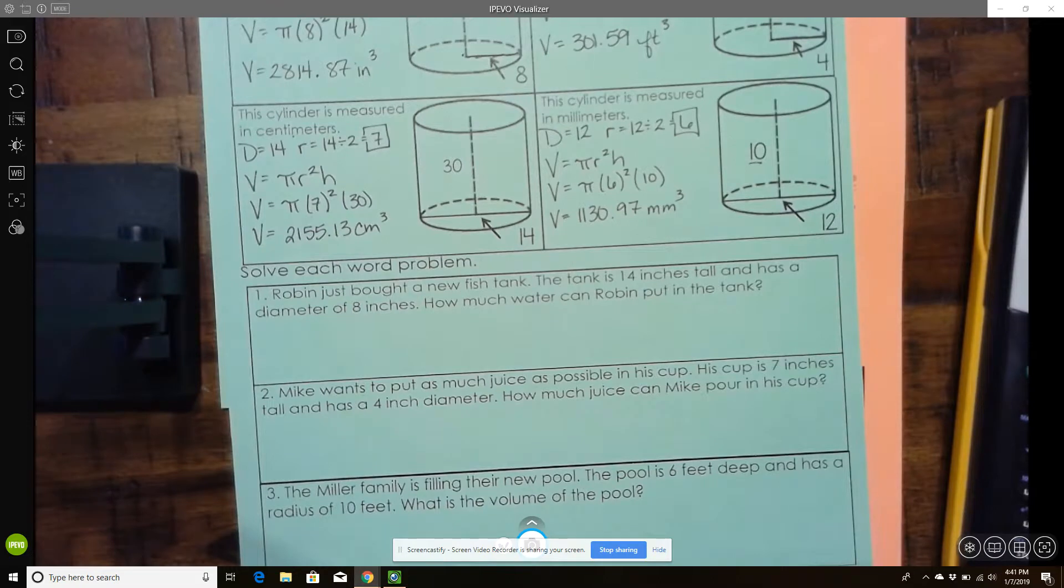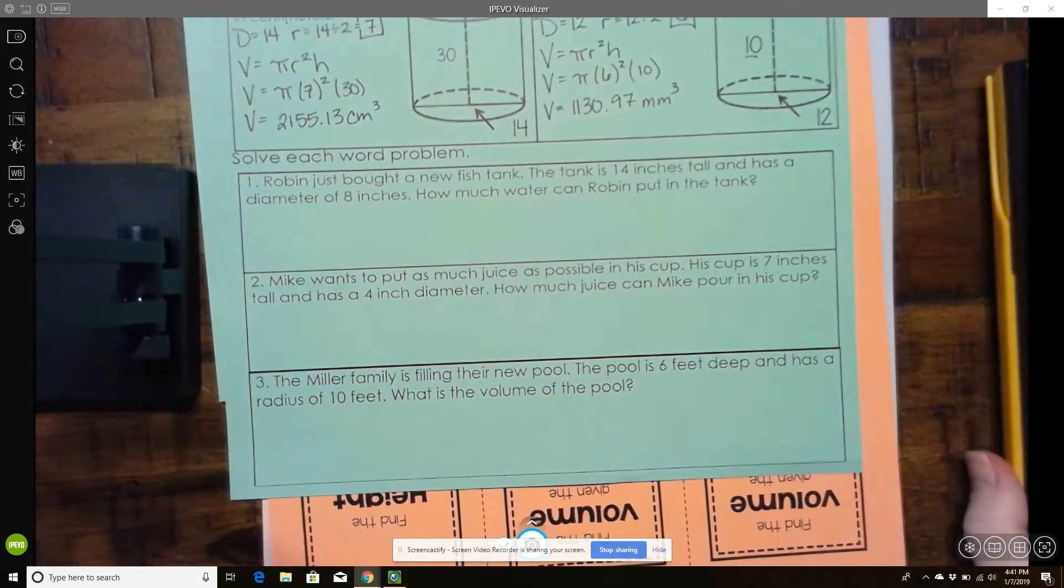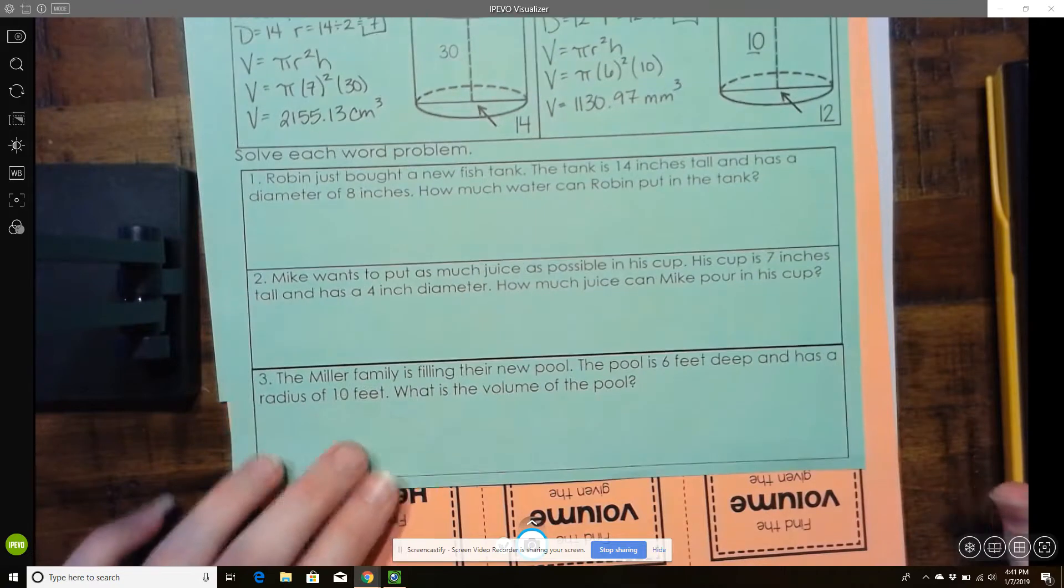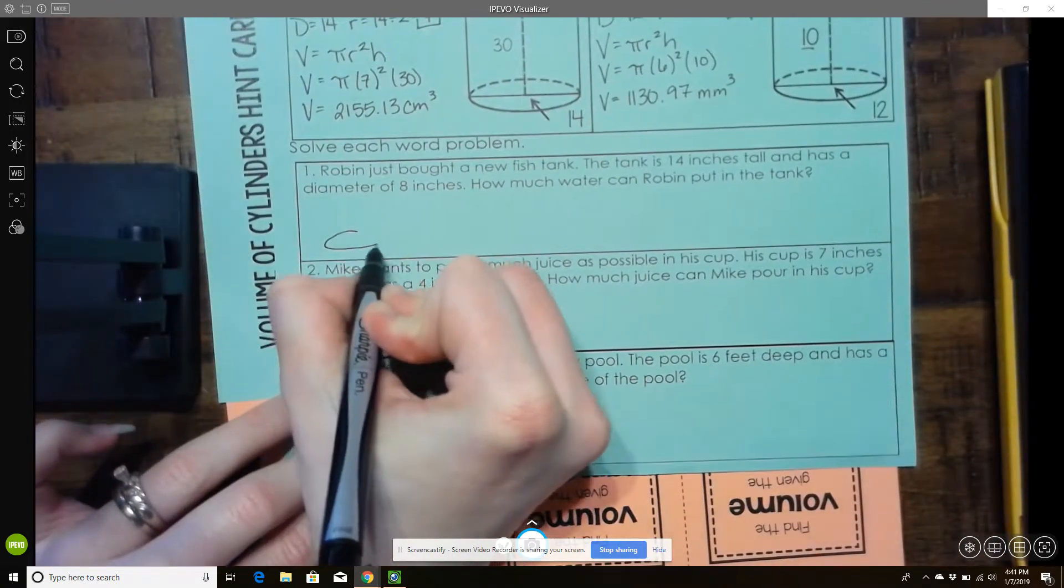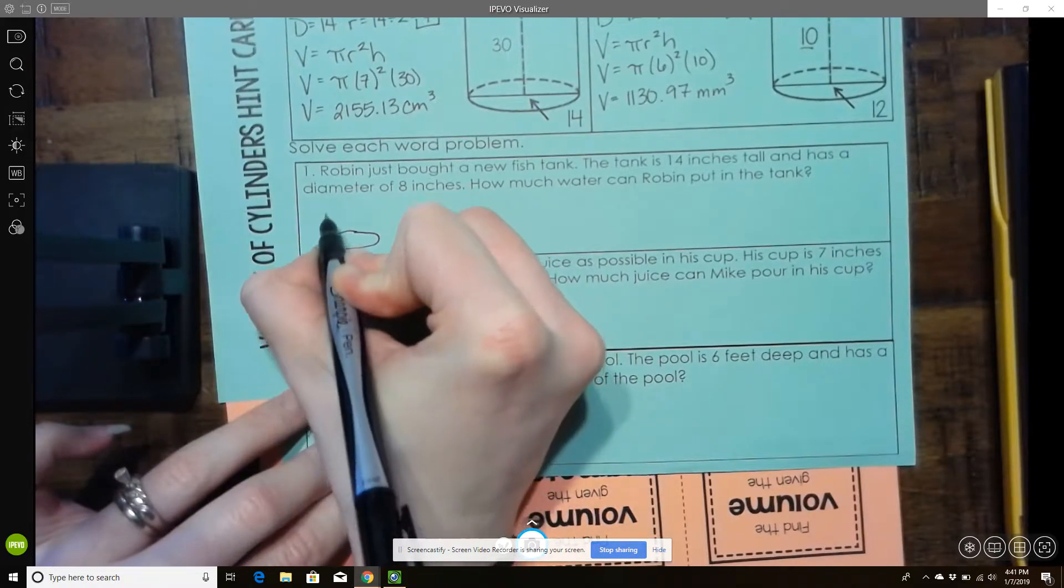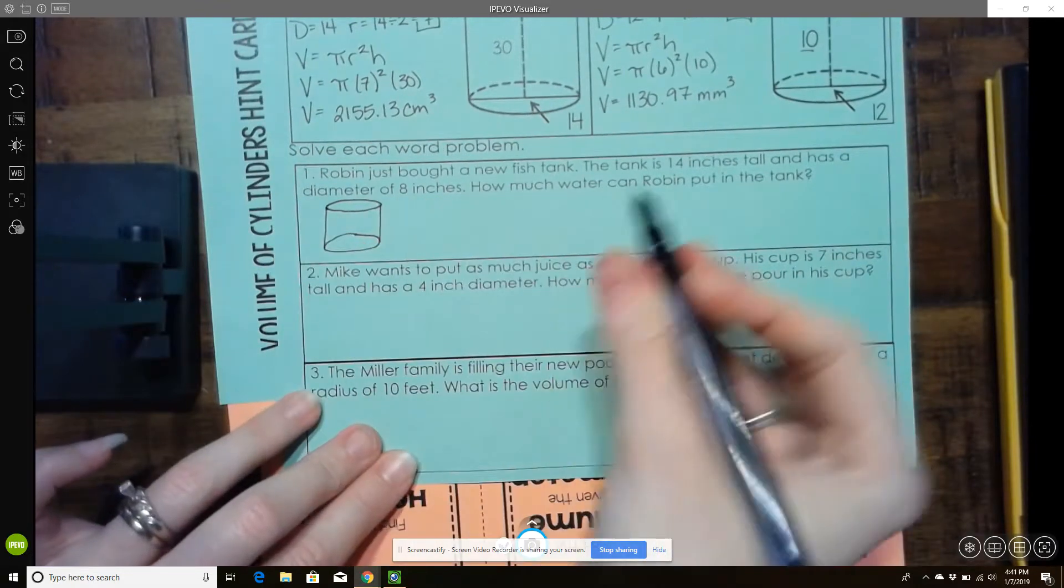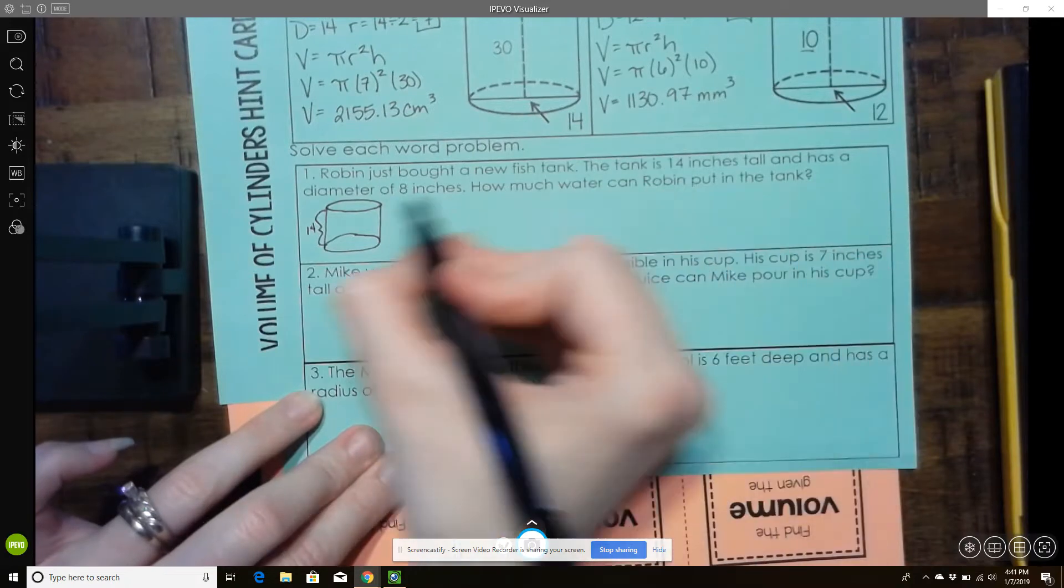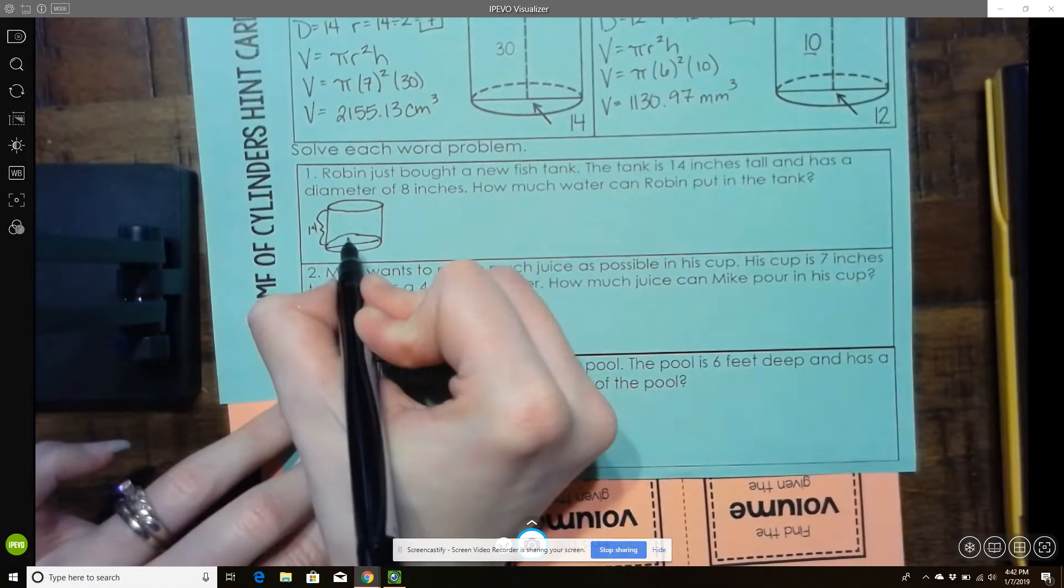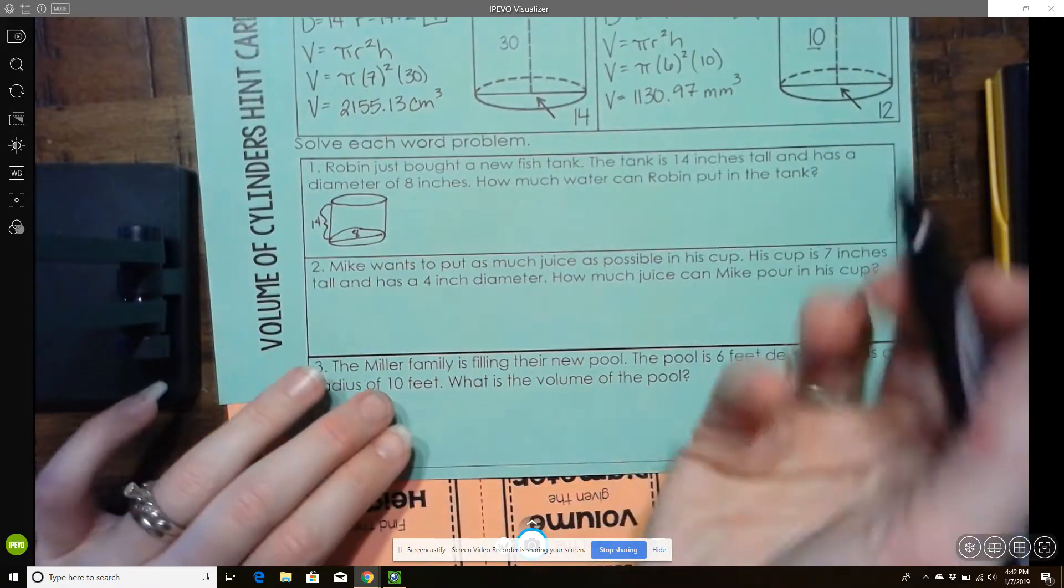Now they don't always give you nice, pretty pictures. So sometimes we get word problems. So Robin just bought a new fish tank. The tank is 14 inches tall and has a diameter of 8 inches. How much water can Robin put in the tank? So I would recommend if you can, draw yourself a diagram. It doesn't have to be pretty. It just has to work. So here's my tank. Now it says it's 14 inches tall. So I know this is 14 and it has a diameter that's all the way across of 8 inches. That way you can label and make sure that you're getting the pieces in the right places.